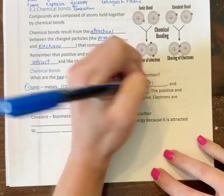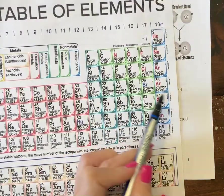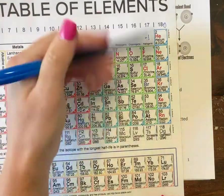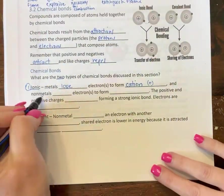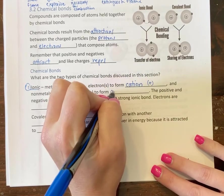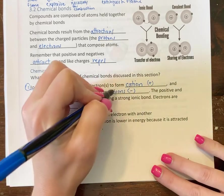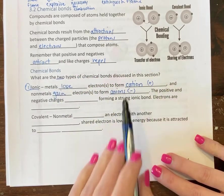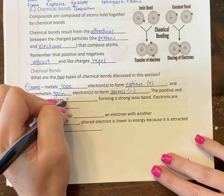And then non-metals - so non-metals are here on the far right, not noble gases. Well, noble gases are non-metals but they don't form anions. So they're going to gain electrons and they're going to form anions which have a negative charge. And so positive and negative charges attract each other.